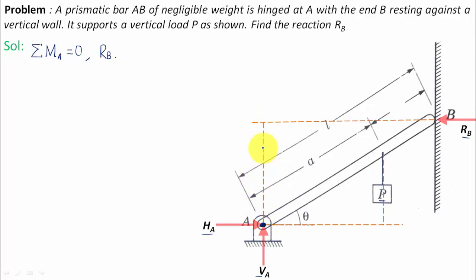Then this distance has got to be L cos θ, and this distance has got to be L sin θ. So what we're going to do is write RB multiplied by L sin θ.